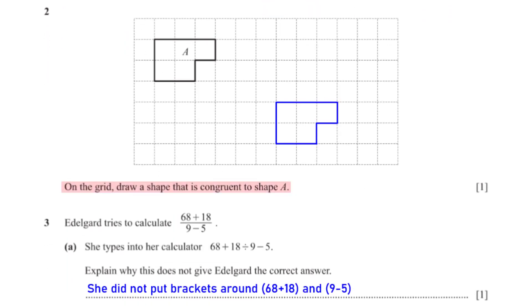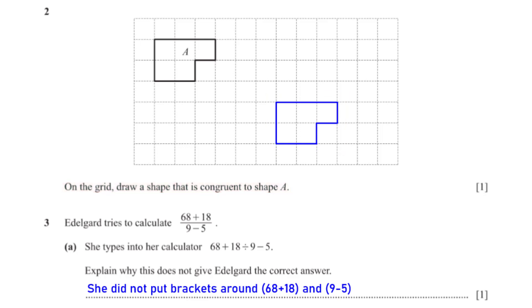On the grid, draw a shape that is congruent to shape A. A shape congruent to shape A would have the same shape and size as shape A.